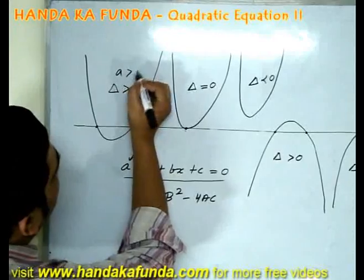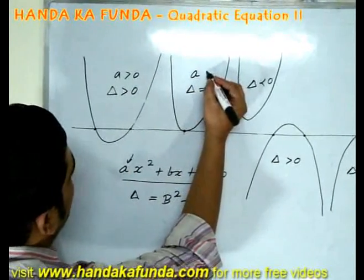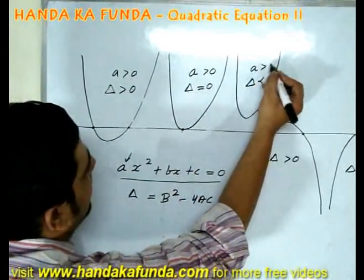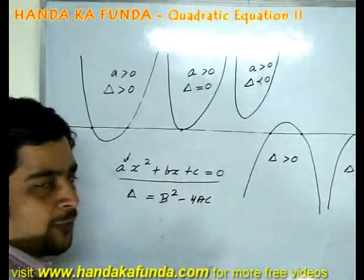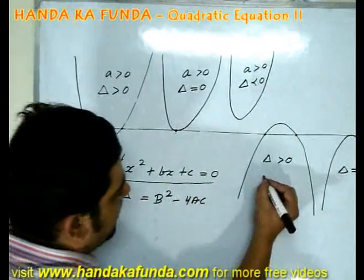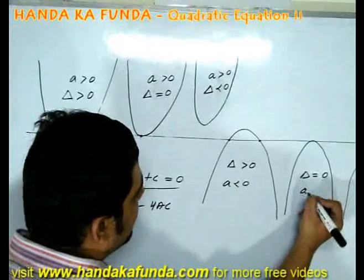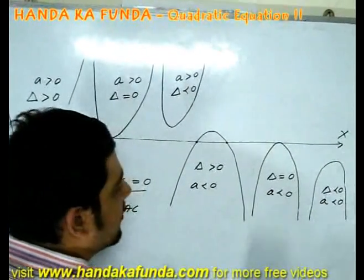So in the first three cases, a is greater than 0, a is greater than 0, and a is greater than 0. It has opened downwards in the next three cases, which means a is less than 0, a is less than 0, and a is less than 0.